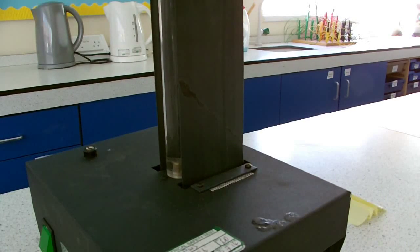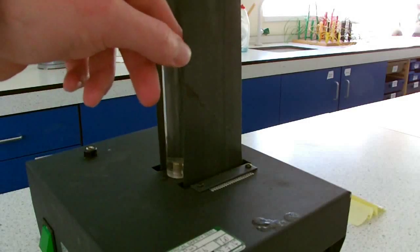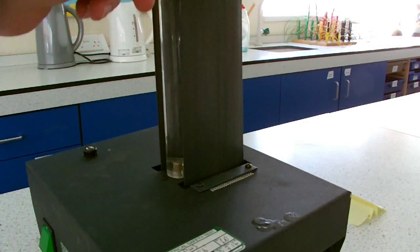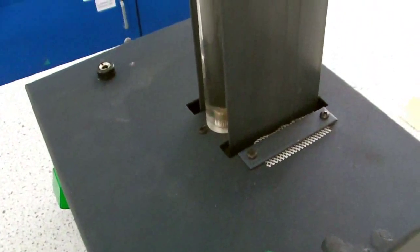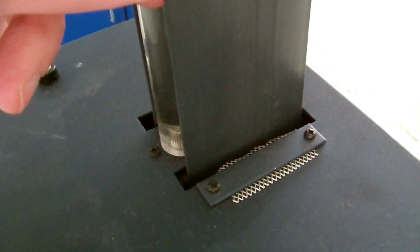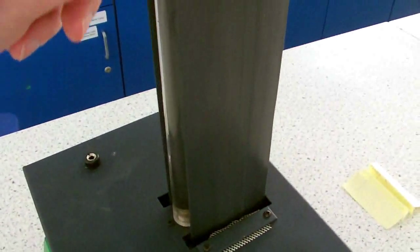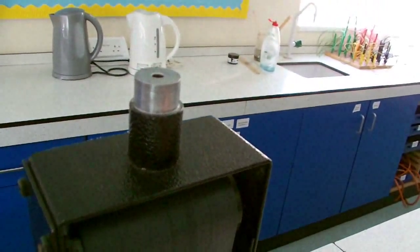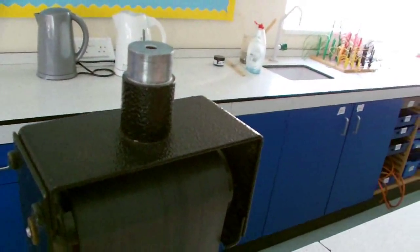The Van de Graaff generator is made up of this vinyl belt which is motorized so it turns. As it turns, it brushes past this conductor down here, this piece of metal. And that means that it becomes charged. That charge is deposited onto this conductor at the top of the vinyl belt which has actually already become slightly charged.